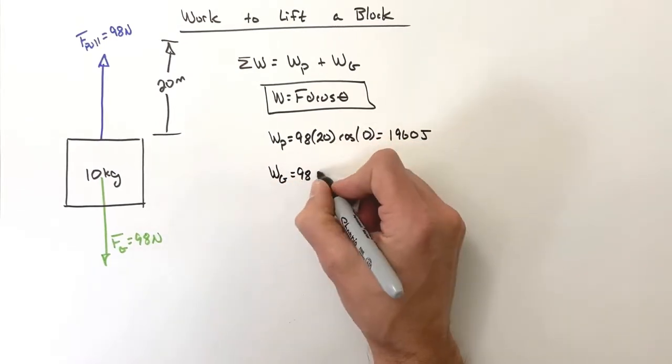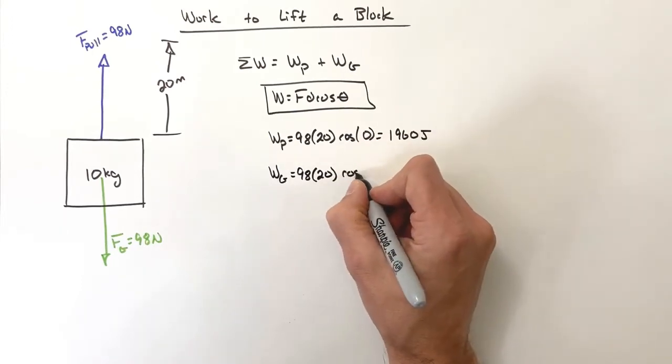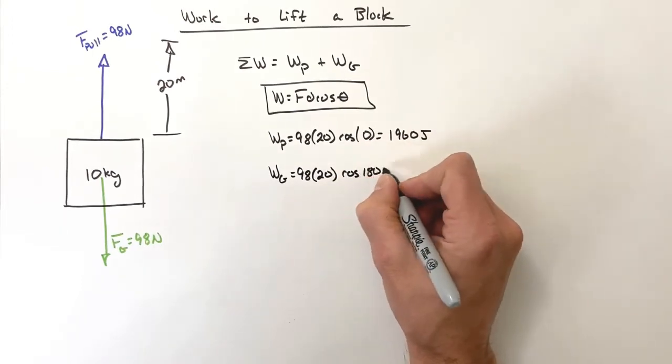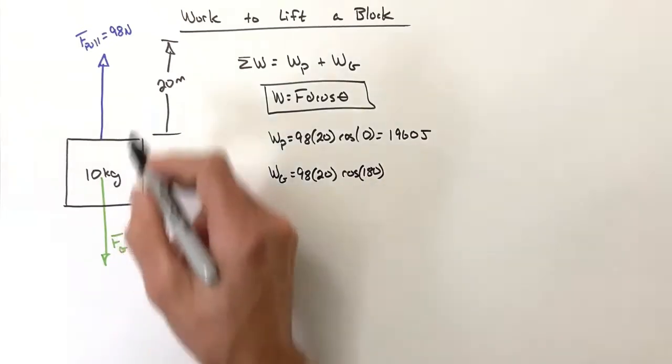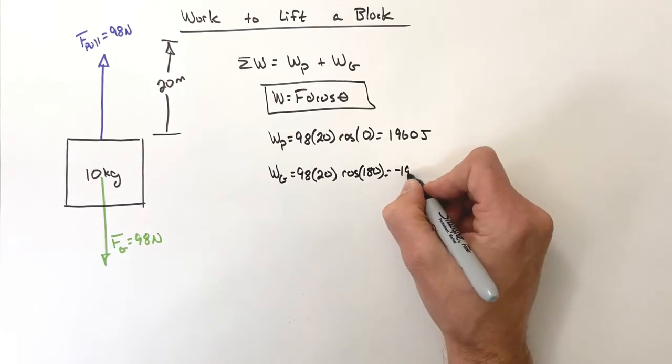Now gravity, on the other hand, is pulling just as hard over the same displacement. The catch is gravity is acting downward, so the angle between gravity and the displacement is 180 degrees. This means the work by gravity is going to be negative 1960 joules.